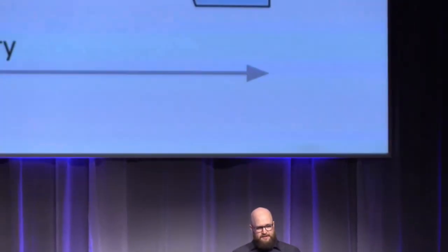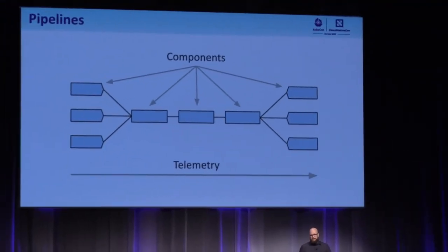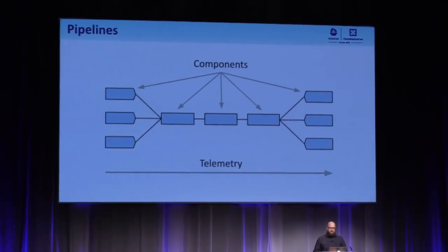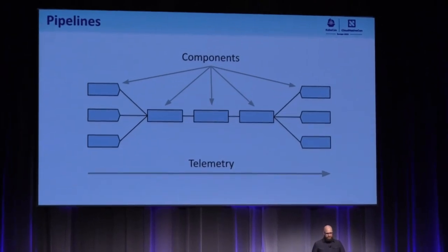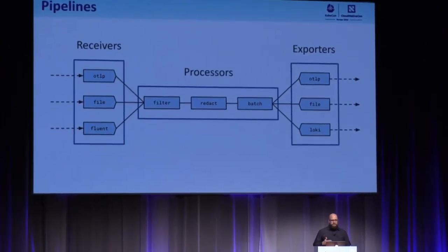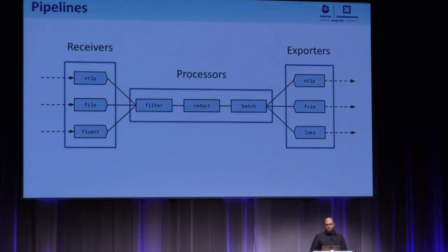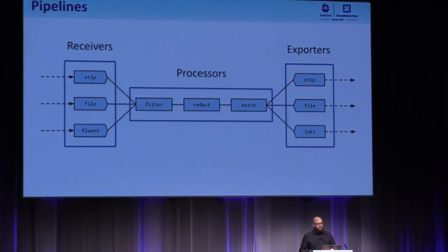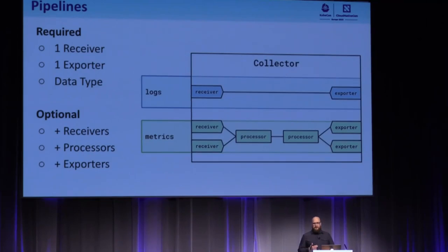Let's get into the details. The collector is built around a notion of data pipelines, where each data pipeline is made up of individual components, and each component will essentially do one thing and then emit data. We have three classes of components: receivers are inputs into the pipeline, processors will modify the data in some way, and exporters are the outputs from the pipeline. The basic requirements for the pipeline are pretty simple — we need at least one receiver, at least one exporter, and exactly one data type.